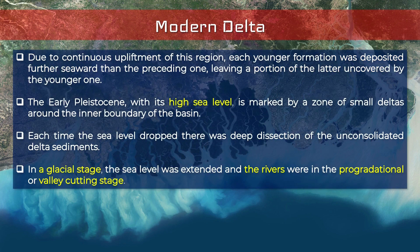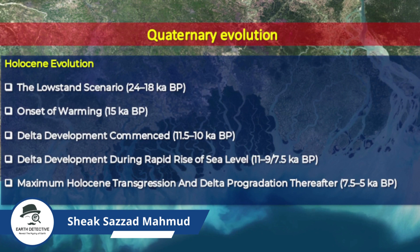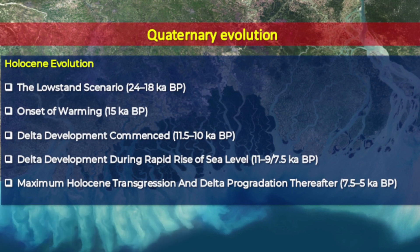At this time the sea level was extended and the rivers were in the progradational or valley-cutting stage. The Bengal Delta, like all other modern deltas, was primarily shaped during the Holocene period. This Holocene evolution is divided into five stages: the lowstand scenario after the Pleistocene glacial age; the onset of warming; the commencement of delta development; delta development during rapid sea level rise; and maximum Holocene transgression and delta progradation.